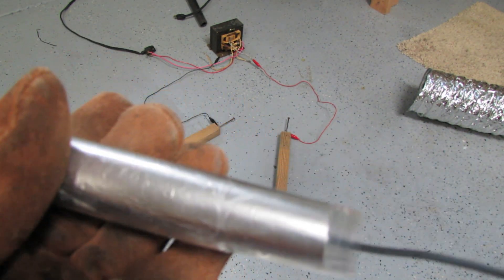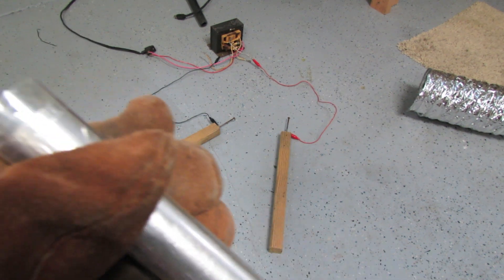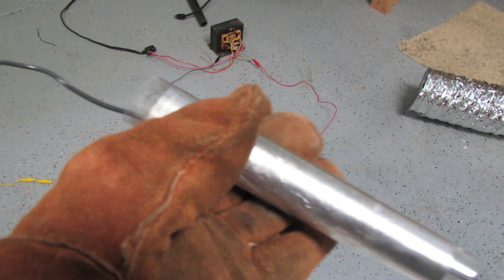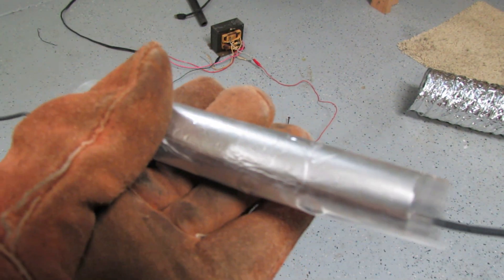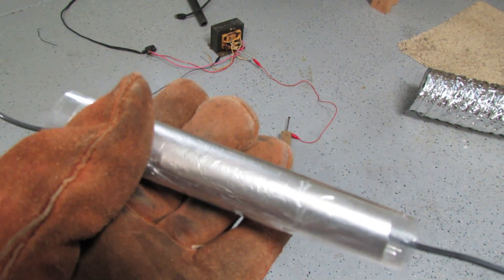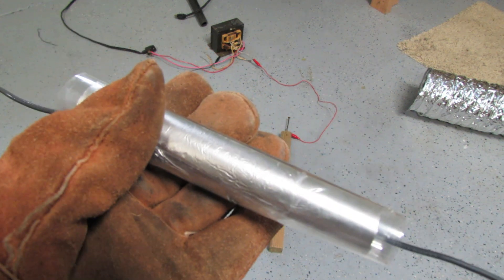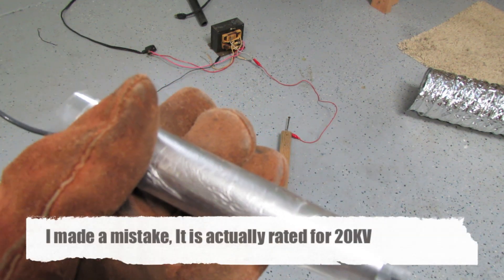Hey guys, this is gooferking and this is a video on my own homemade high voltage capacitor. I made this based on someone else's video. I'll include the link to that video in the description. This thing is rated for about 9,000 volts, so I'm going to be using a MOT transformer which is around 2,000 volts.